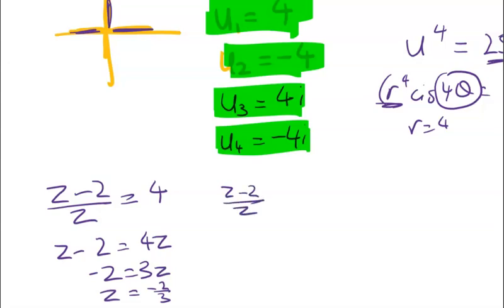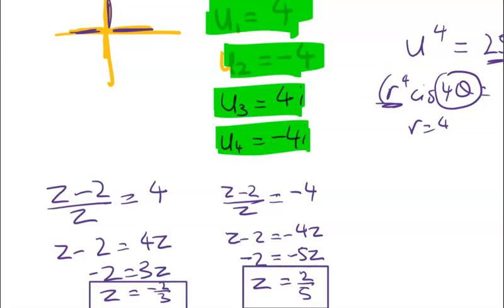z minus 2 on z is equal to, what's the next one? Negative 4. z minus 2 is equal to negative 4z. Negative 2 is equal to negative 5z. So z is equal to 2 fifths. All right so you can see that those are the two real roots that we've got.